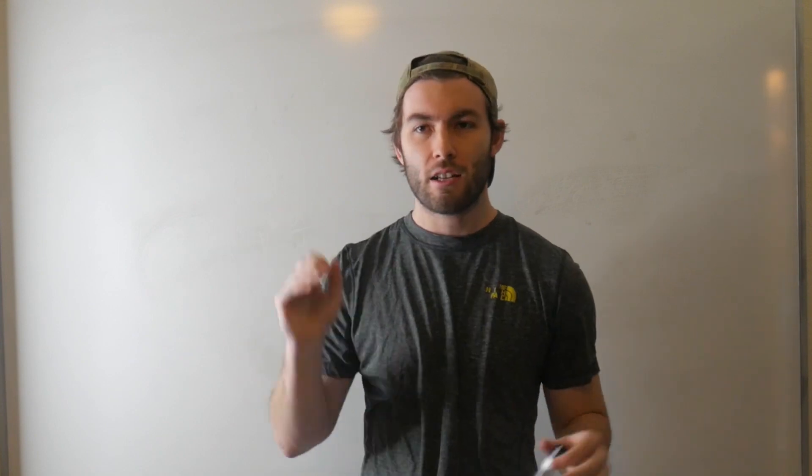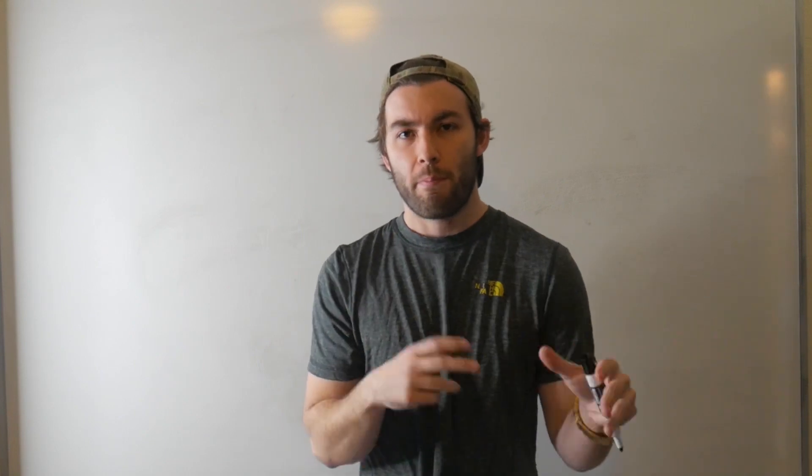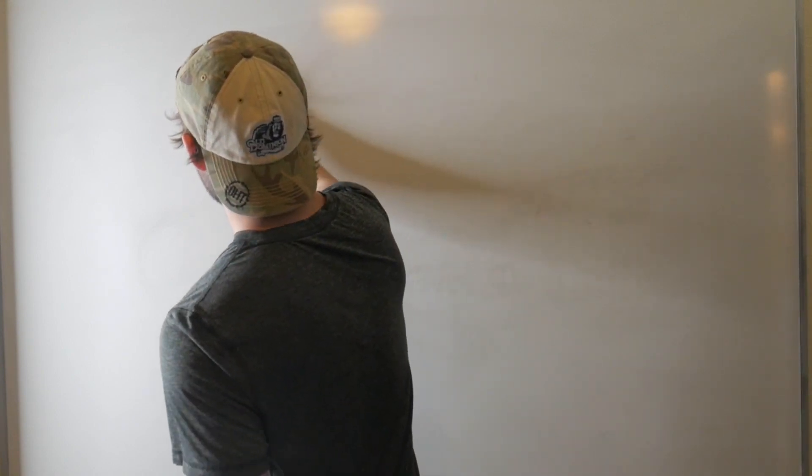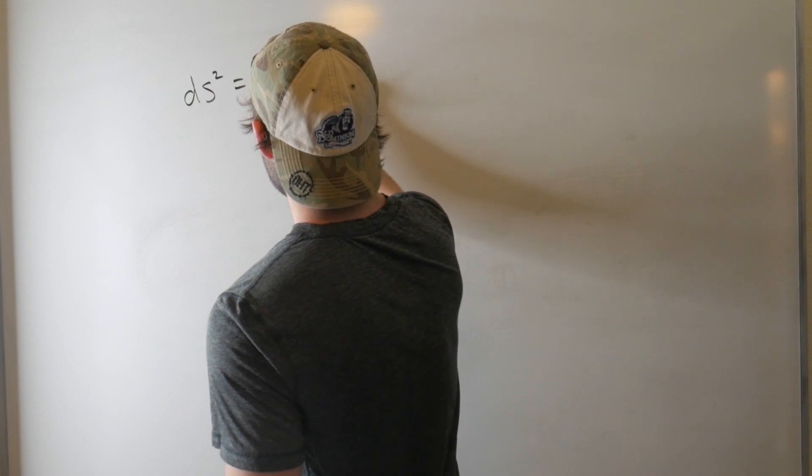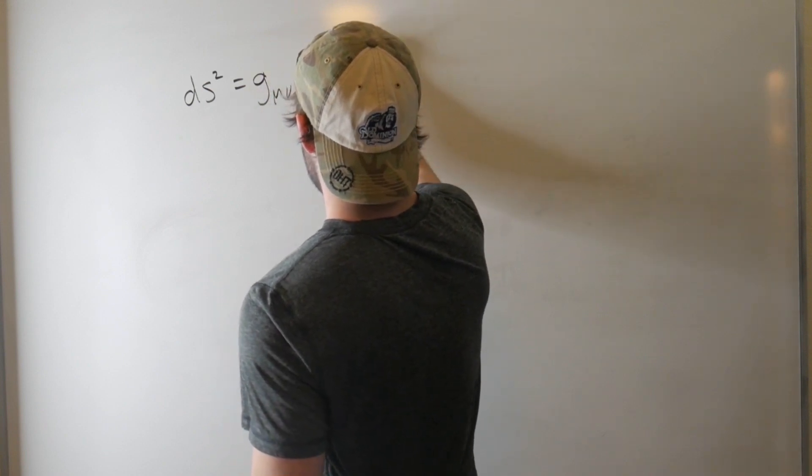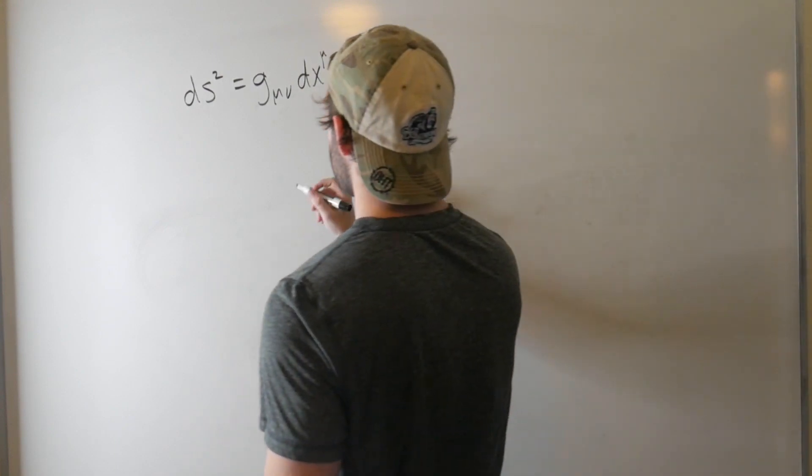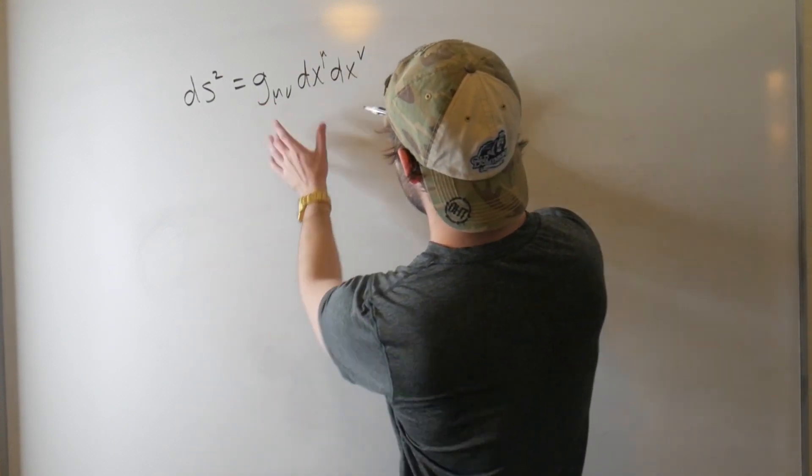But as we saw for the Minkowski metric, that's where things got a little bit different. Our metric had minus terms in it. It corresponded to scalar products that had minus terms in it. And for even more complicated geometries, things get even weirder. And instead of just redefining the scalar product every time we have a different geometry, we'd like to be able to absorb all that messy stuff into the metric. Where do upper and lower indices come in?